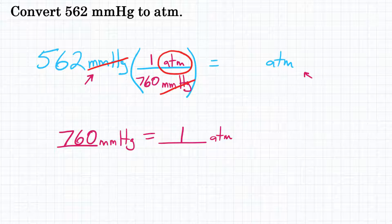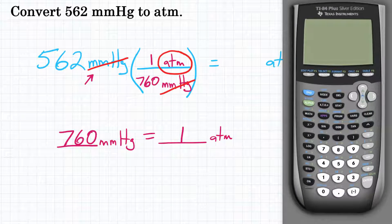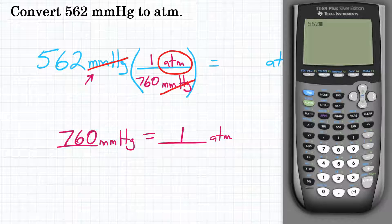Now we can do the math. If we get our calculator, we're going to take 562 and multiply by our conversion factor, by our fraction. If you're multiplying by a fraction, you're multiplying by the top and dividing by the bottom. We're going to skip anything that's a one because it won't change our answer, so we'll just divide by 760.